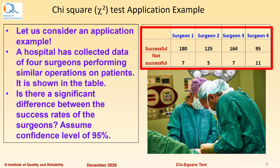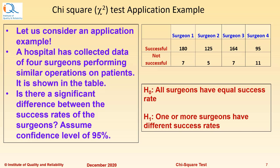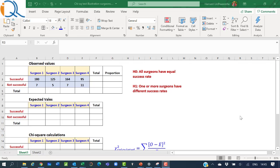Assume confidence level of 95%. So, here the null hypothesis H0 will be all surgeons have equal success rate, while as H1, one or more surgeons have different success rates.